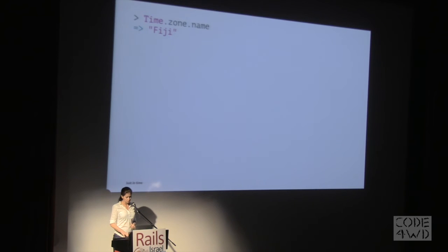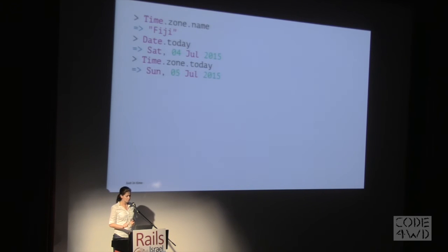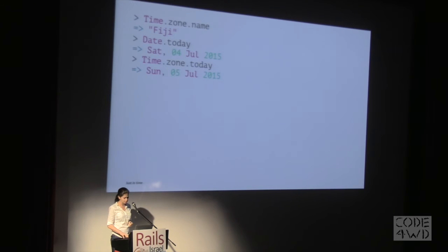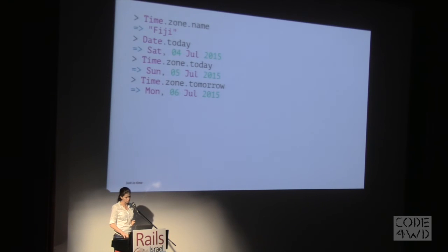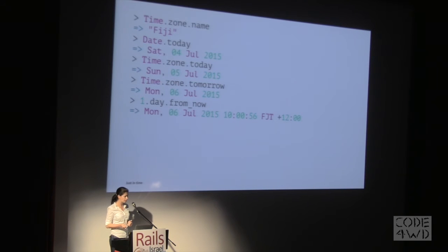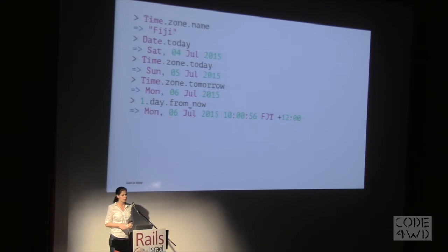Checking that we are still in Fiji, let's look at date. If I do Date.today, I get the day I was in New York. But if I do Time.zone.today, I get the correct time — the day after — according to the application. We can also do Time.zone.tomorrow. And if you use any of the Rails helpers like one_day_from_now or two_hours_from_now, they go through the localized time as well, so you get the correct time.